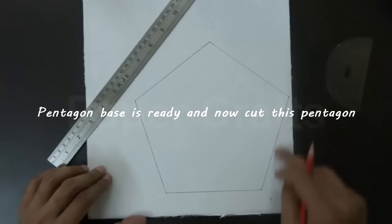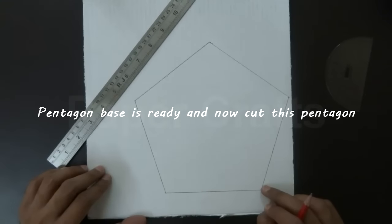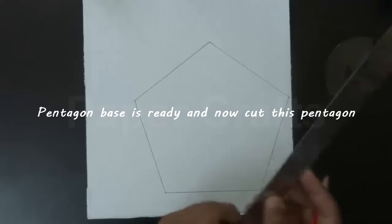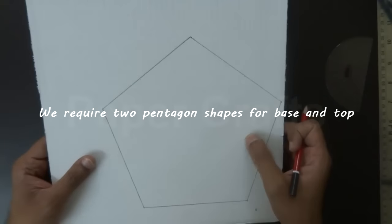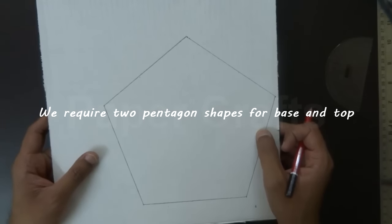Cut this pentagonal shape from the cardboard. We need 2 such shapes, one for the base and one for the top of the lampshade.